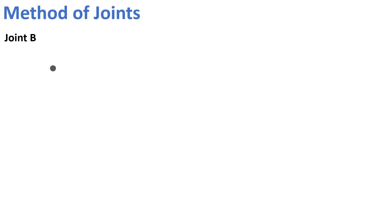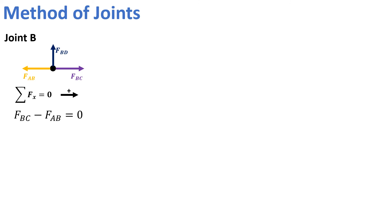Now we are analyzing joint B. Three forces act on joint B, but since FBD is a zero-force member, effectively two forces act: FAB and FBC. FAB was determined to be a tension force and is again taken as tension, and we assume FBC is also a tension member. From the equilibrium condition that the sum of forces in the X direction is zero, we get FBC - FAB = 0, since FBC acts rightward and FAB acts leftward. From this, FBC comes out to be 225 pounds, and since the answer is positive, member BC is confirmed as a tension member.